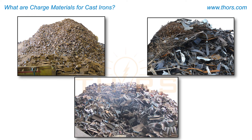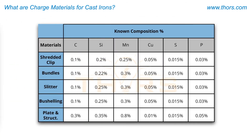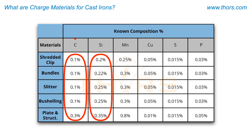The steel scrap used in cast iron charge make-ups has many names, such as slitter, bundles, and shredded clip. Steel scrap tends to have low amounts of carbon and silicon compared to what is required for the final chemistry of cast irons.